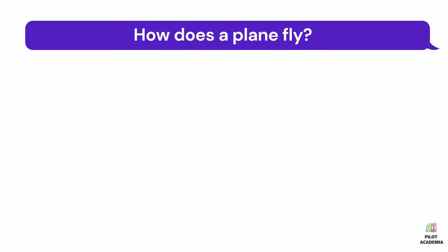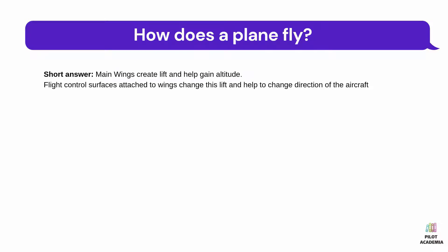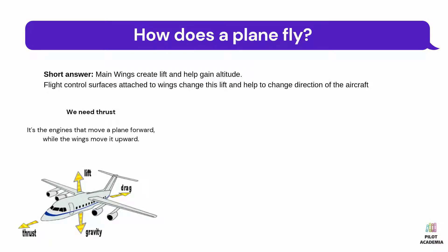How does a plane fly? The short answer: main wings in an aircraft create lift and help gain altitude. Flight control surfaces attached to wings change this lift and help to change the direction of the aircraft. First, we need thrust.